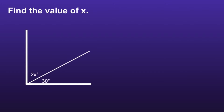Find the value of x. Since we know these two angles are equal to 90 degrees, we can use that information to create an equation. This equation would be 2x plus 30 is equal to 90.